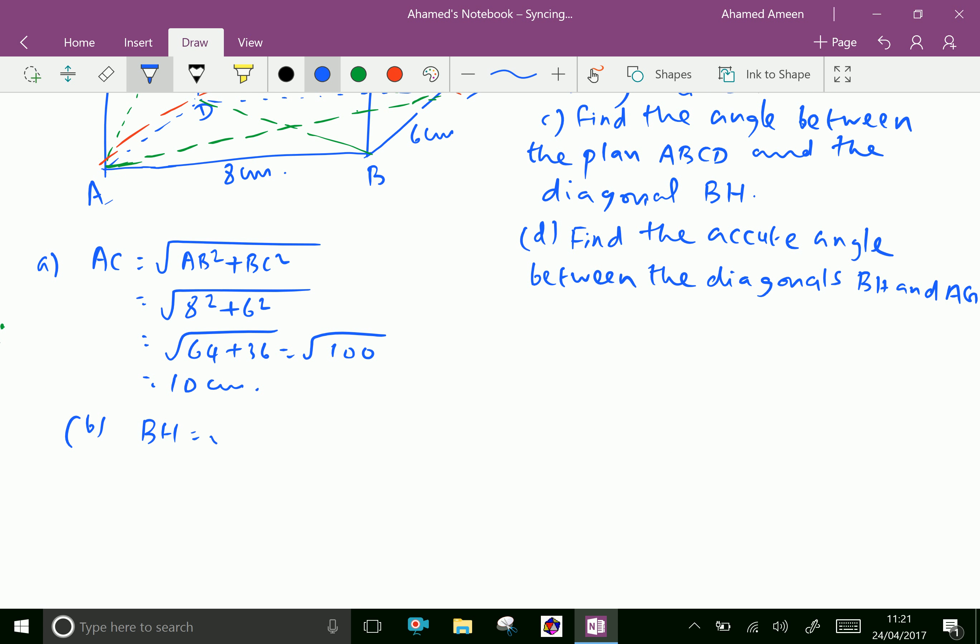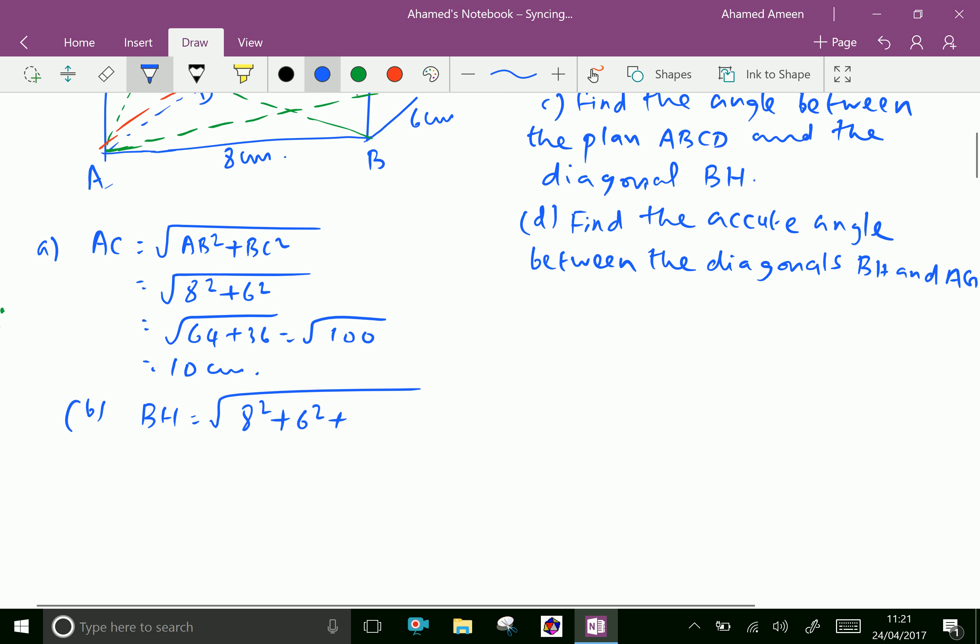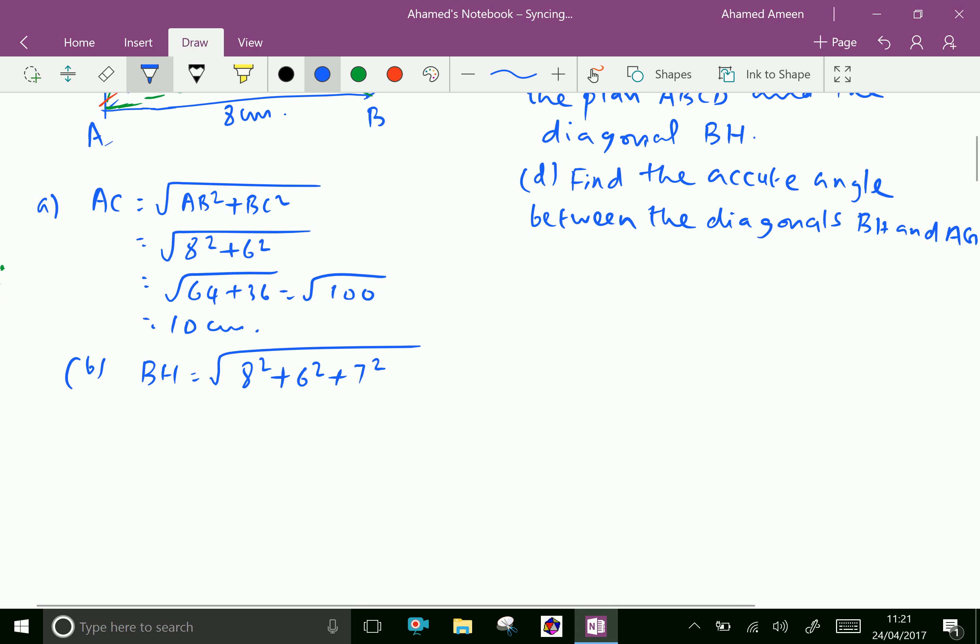The square root of 8 squared plus width squared is 6 squared, and height squared is 7 squared, which gives 64 plus 36 plus 49.